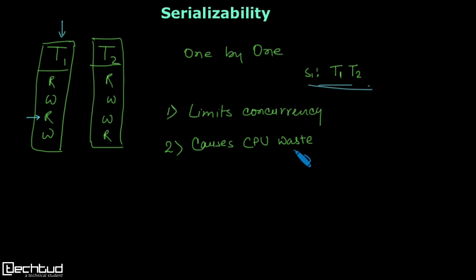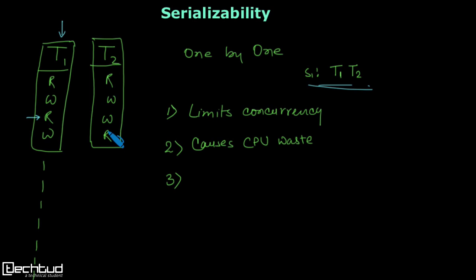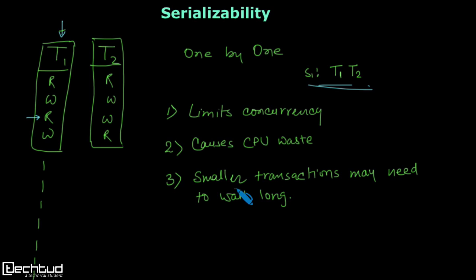So once T1 is finished, then the CPU will be given to T2. The CPU is idle during this time, and that's why it causes CPU waste. The third disadvantage: if transaction T1 is very long — say it has a thousand operations — and T2 has only four operations, then in a serial schedule, T2 will not get a chance to execute until all thousand operations of T1 are done. So smaller transactions may also need to wait a long time.